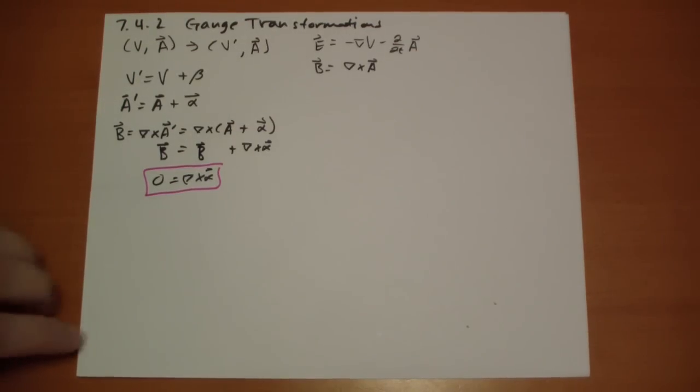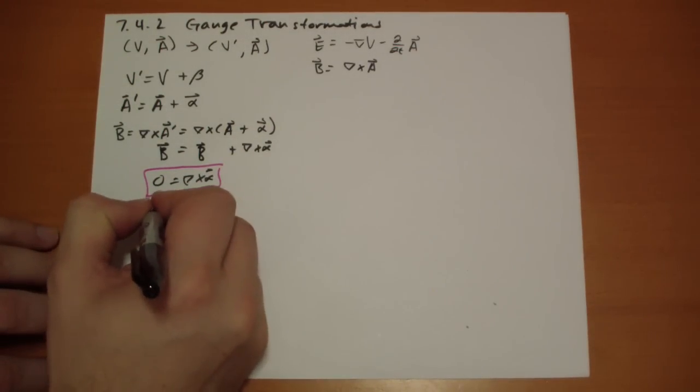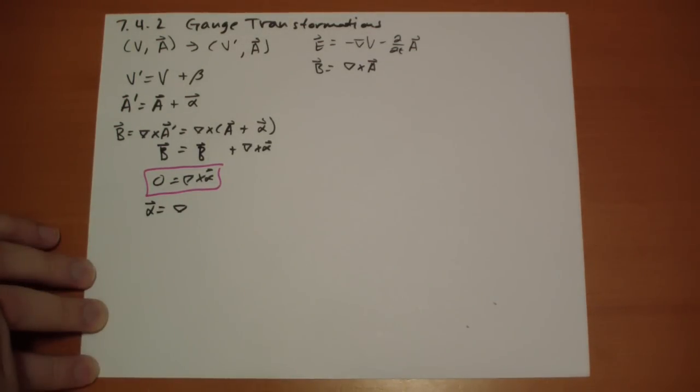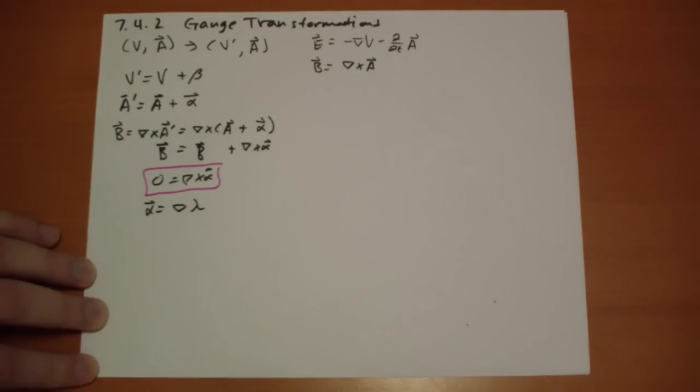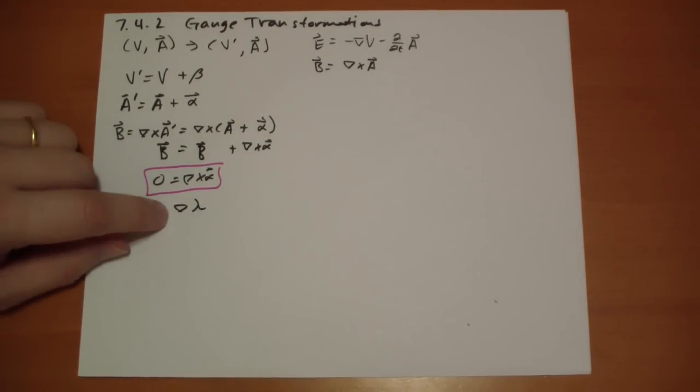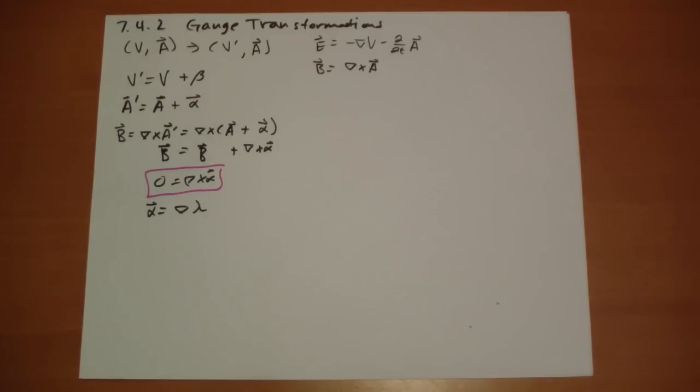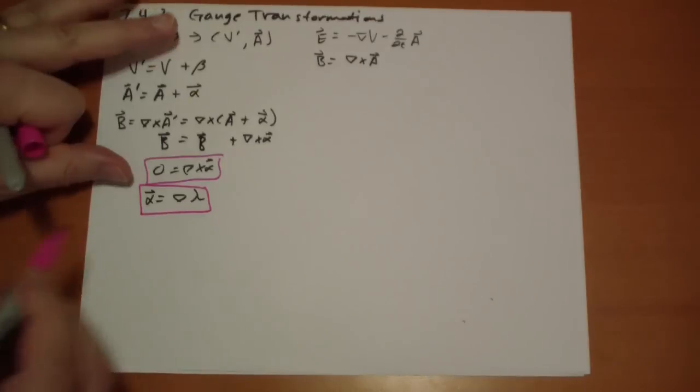Well, if the curl of something is zero, then that implies that this field itself is the divergence of some other field. We're going to call this other field lambda. Not the divergence, the gradient of some scalar field lambda. So let's box that.